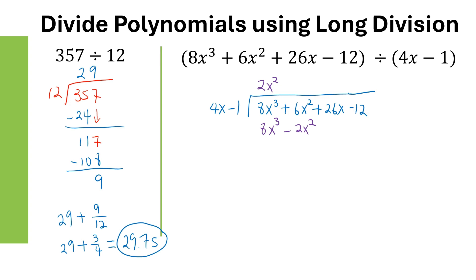When you subtract, change the signs for all the terms — this becomes negative and this becomes positive. So 8X cubed becomes 0 and disappears. Adding the X squared terms gives 8X squared. Bring down the next term, which is positive 26X.